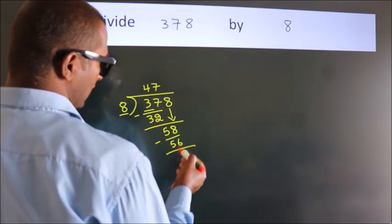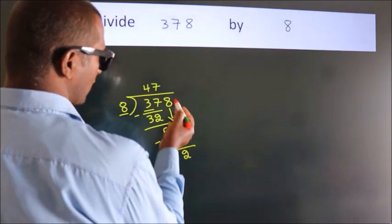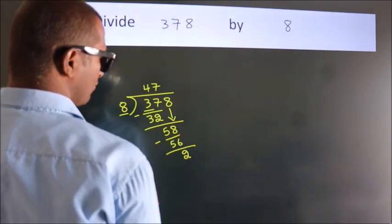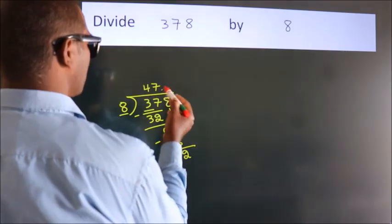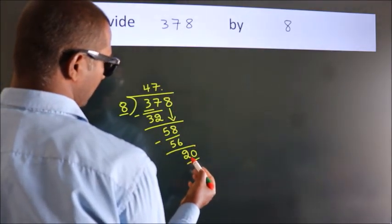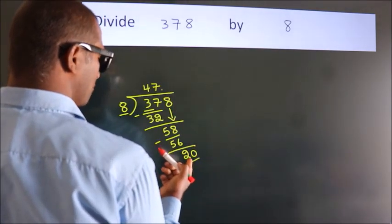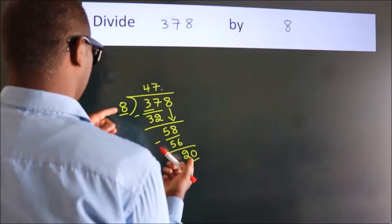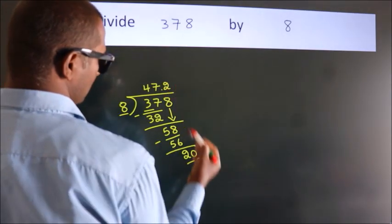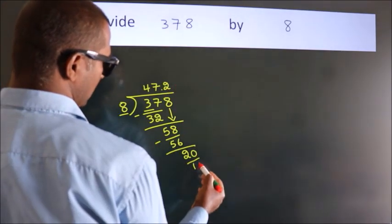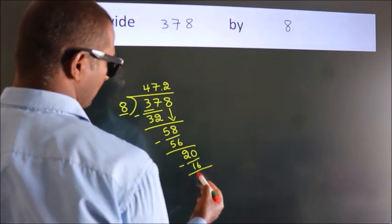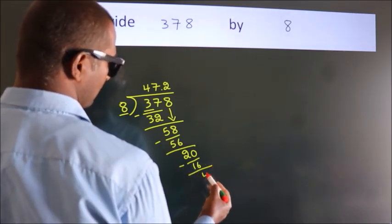After this, there are no more numbers to bring down. So what we do is put a dot and take 0, giving us 20. A number close to 20 in the 8 times table is 8 twos, 16. Now we subtract, we get 4.